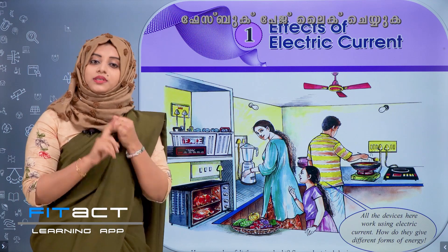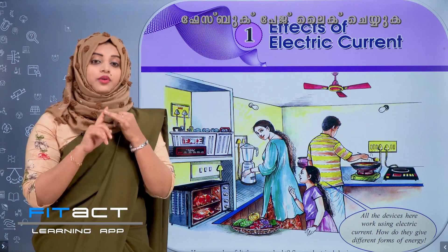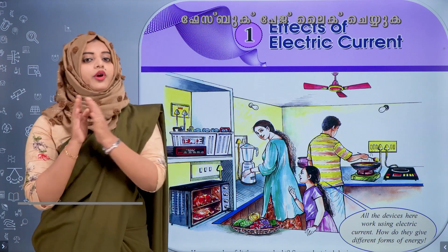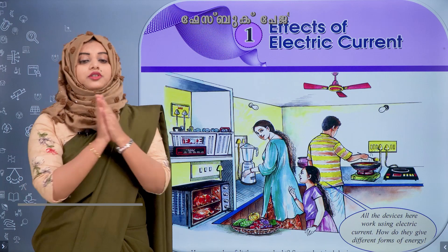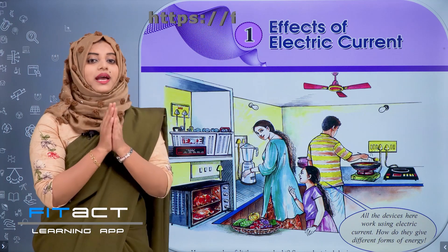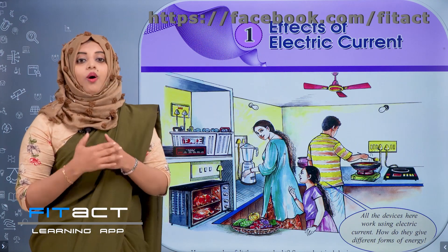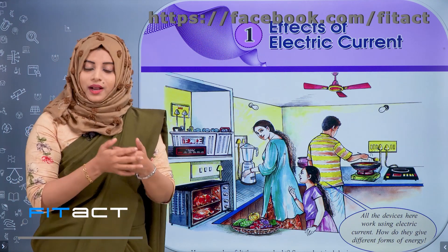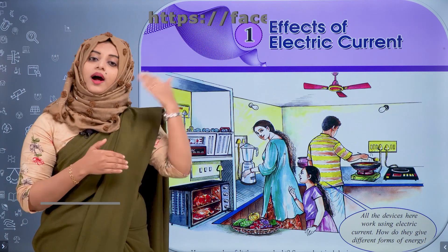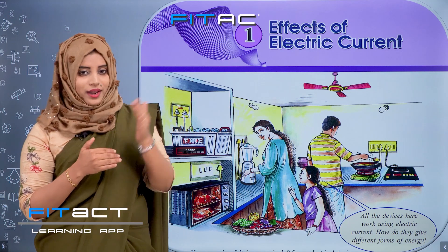Electricity can be produced, controlled, and transmitted. Also, it can be converted into other forms of energy.